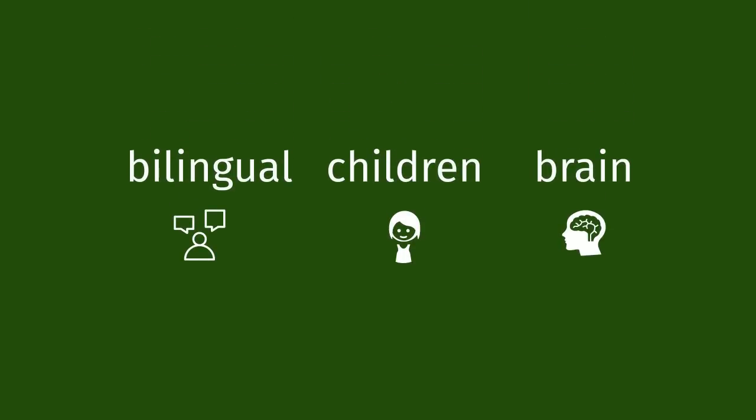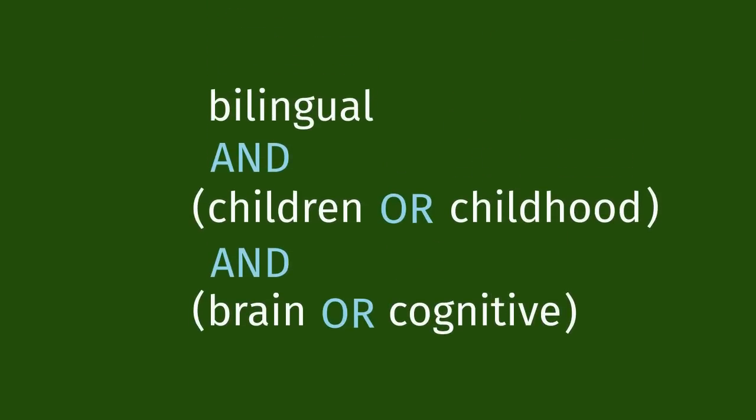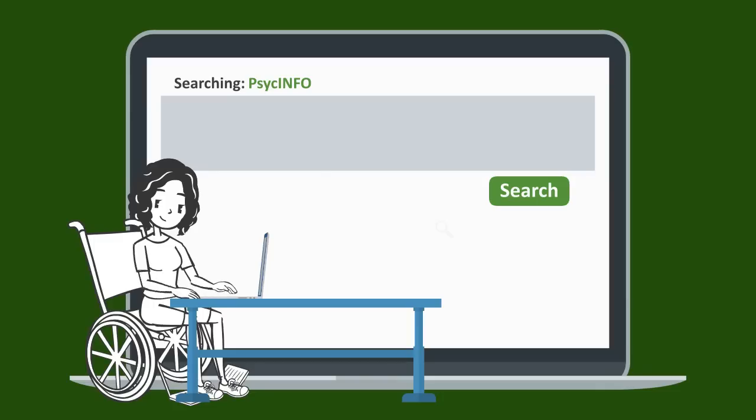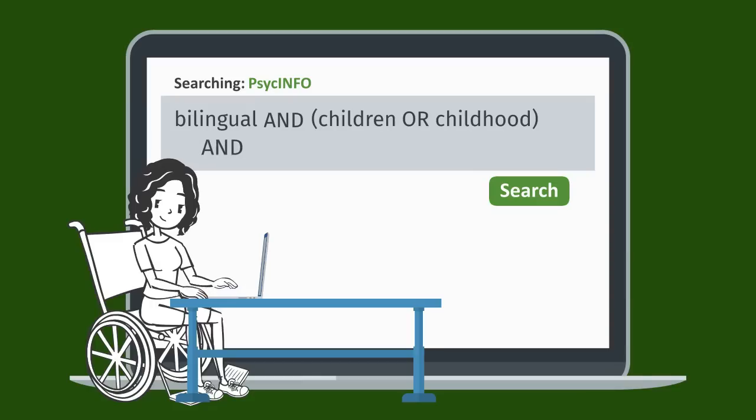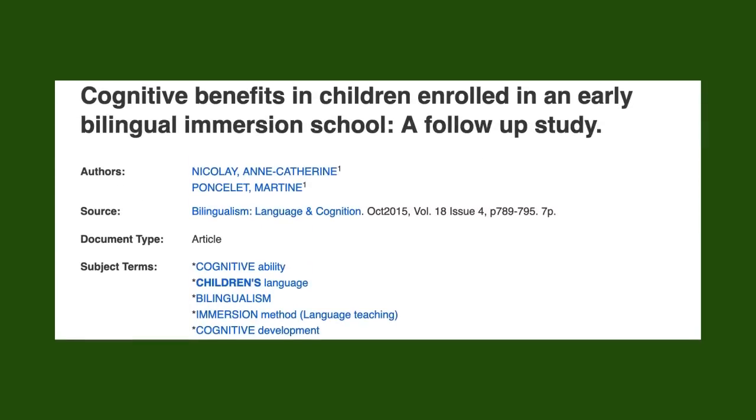Now we need to put these together with our other words. Library databases do this with the use of OR and parentheses. Anytime you use an OR, you want to make sure you nest the related words in parentheses. In this example, you are telling the database to look for resources that include the word bilingual AND the word children OR childhood plus the word brain OR cognitive. This will produce results that definitely include the word bilingual AND either the word children OR childhood AND either brain OR cognitive.